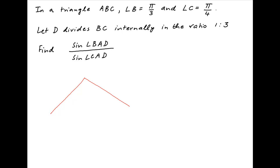We are given triangle ABC where angle B is equal to π/3 and angle C is equal to π/4. The point D on line BC divides BC internally in the ratio 1:3. So let's assume that BD is equal to x and CD is equal to 3x. Now join A and D.